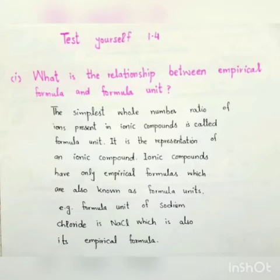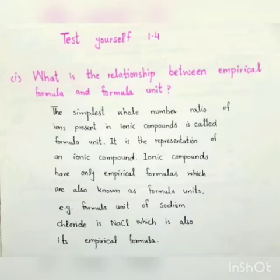Empirical formula is the simplest whole number ratio of atoms in any compound. The formula unit is the simplest whole number ratio of ions in ionic compounds.